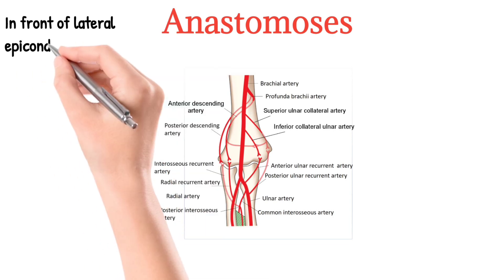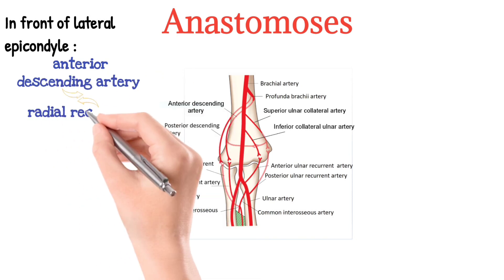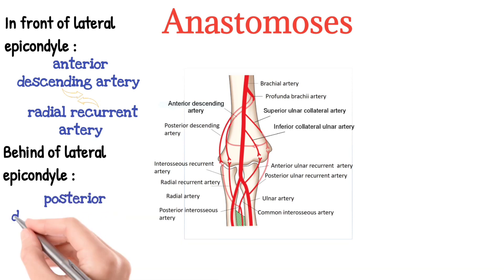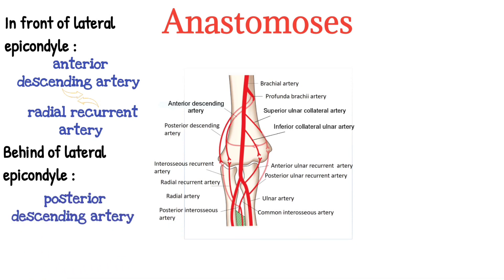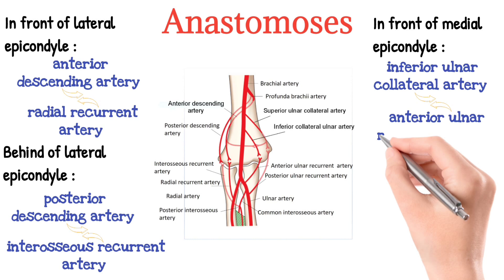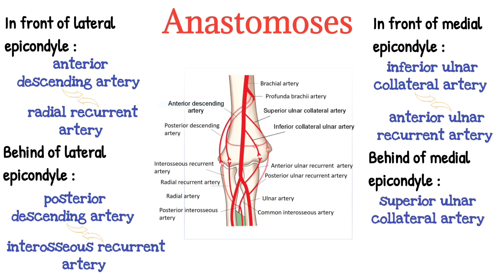In front of the lateral epicondyle of the humerus, the anterior descending branch of the profunda brachii anastomoses with the radial recurrent branch of the radial artery. Behind the lateral epicondyle, the posterior descending branch of the profunda brachii artery anastomoses with the interosseous recurrent branch of the posterior interosseous artery of the ulnar artery. In front of the medial epicondyle, the inferior ulnar collateral branch of the brachial artery anastomoses with the anterior ulnar recurrent branch of the ulnar artery. Behind the medial epicondyle, the superior ulnar collateral branch of the brachial artery anastomoses with the posterior ulnar recurrent branch of the ulnar artery.